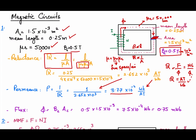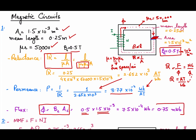Now we can calculate the flux in this area. The flux density is given as 0.5 tesla, and flux equals the product of magnetic flux density and cross-sectional area. So flux = 0.5 × 1.5×10⁻³, giving a flux of 0.75 milliweber in this core structure.